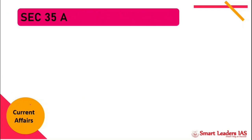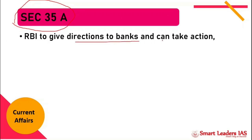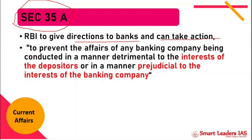The power invoked by the RBI to undertake restrictive actions on PMC was Section 35A. Section 35A of the Banking Regulation Act empowers the RBI to give direction to banks and take action if it finds that a bank is taking actions detrimental to depositors or to the banking company itself. It is under this provision that the RBI took control of the bank. Do not confuse this with Article 35A of the Constitution, which related to a special provision for Jammu and Kashmir and has since been abrogated along with Article 370.